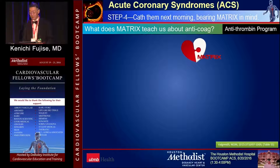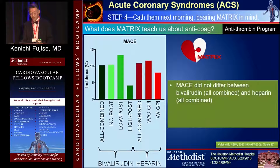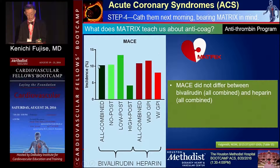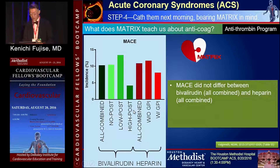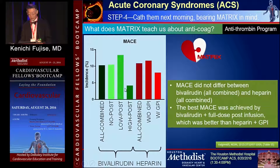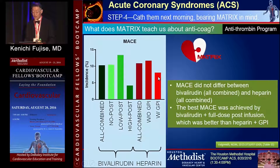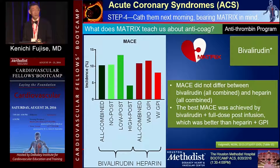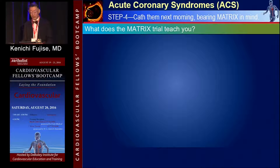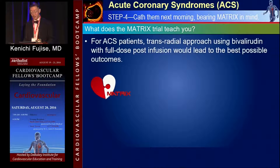How about antithrombin? In the antithrombin program, MACE really didn't differ between bivalirudin and heparin overall when combined. However, please pay attention to the high post-PCI infusion dose: MACE was best achieved with bivalirudin plus full-dose post-infusion, which was even better than heparin plus GPI. So the actual clear winner was bivalirudin. MATRIX teaches us that for ACS patients, transradial approach using bivalirudin with full-dose post-infusion leads to the best possible outcomes.